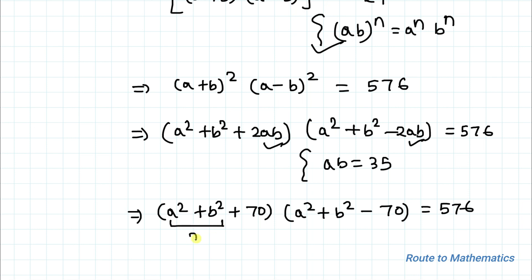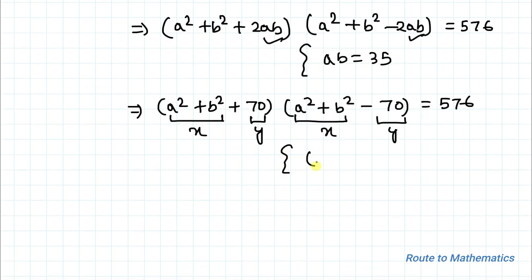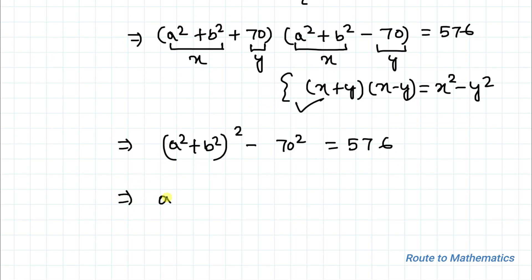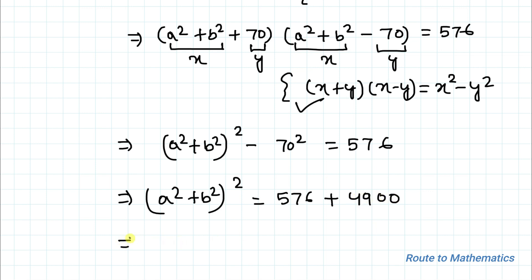Let's consider (a²+b²) as x and 70 as y. The above expression becomes (x+y)(x−y), which equals x²−y². Applying this, we get (a²+b²)² minus 70² equals 576. This implies (a²+b²)² equals 576 plus 4900, which equals 5476.